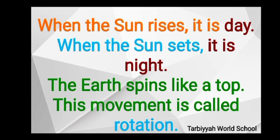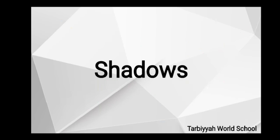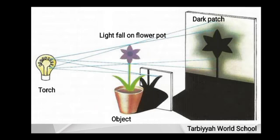Now let's look at shadows. What are shadows? The dark patch that we can see on the wall is a shadow. As you can see in the picture, the torch is the source of light. In front of the wall we place an object — here a flower pot — and light is passed from the torch onto the flower pot.